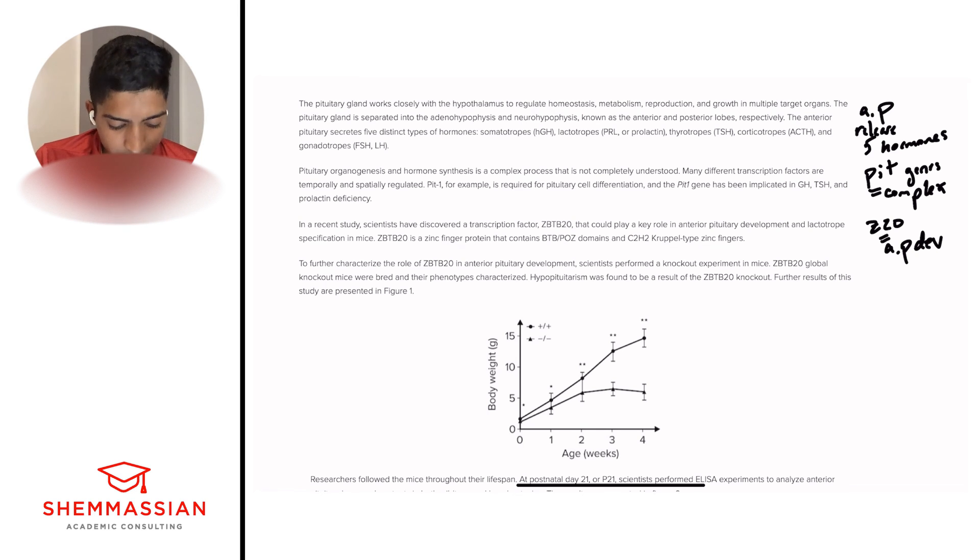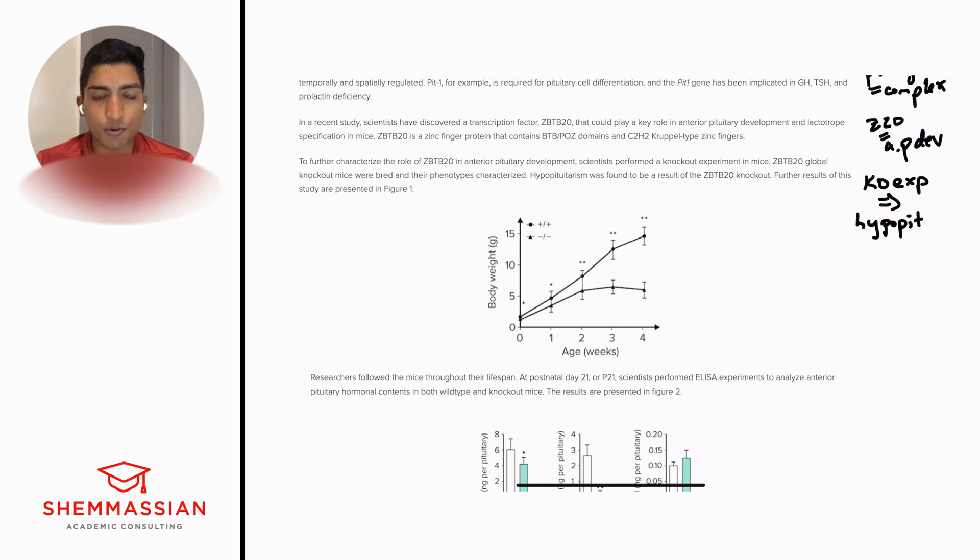Let's go on to the next one. To further characterize the role of ZBTB20 in anterior pituitary development, scientists performed a knockout experiment in mice. ZBTB20 global knockout mice were bred and their phenotypes characterized. Hypopituitarism was found to be a result of the ZBTB20 knockout. Further results are presented in figure one. So here we have a study. What type? It's a knockout experiment, and this results in hypopituitarism. I'll just write hypopit, but I'm just saying when we knock this out, we result in this deficiency. Next we have a figure. I don't like to spend too much time on figures, maybe just focusing on x-axis and y-axis, which gives us independent and dependent variables. We see age in weeks and body weight. I'm not going to spend too much time because we don't know what questions will be asked.